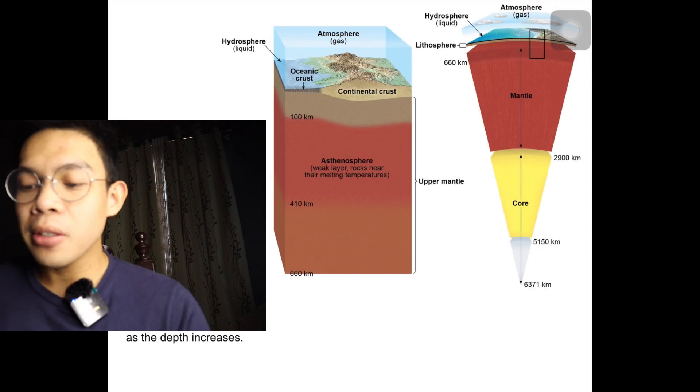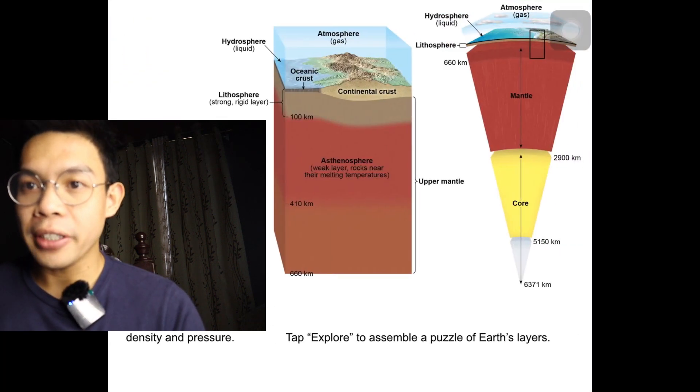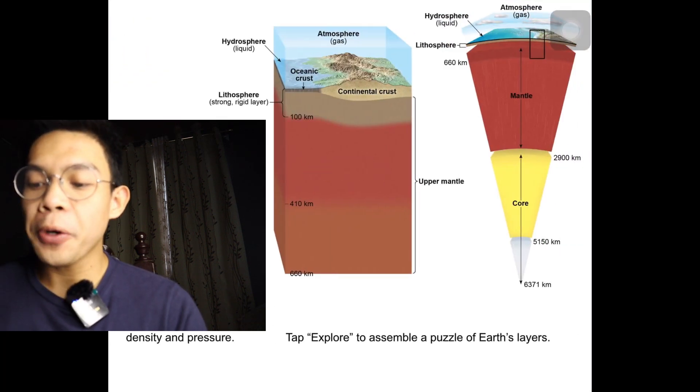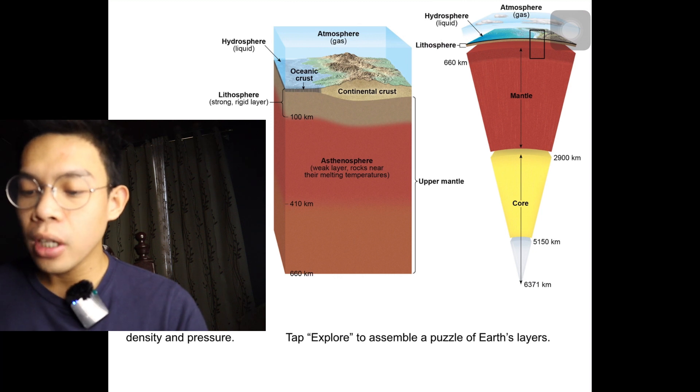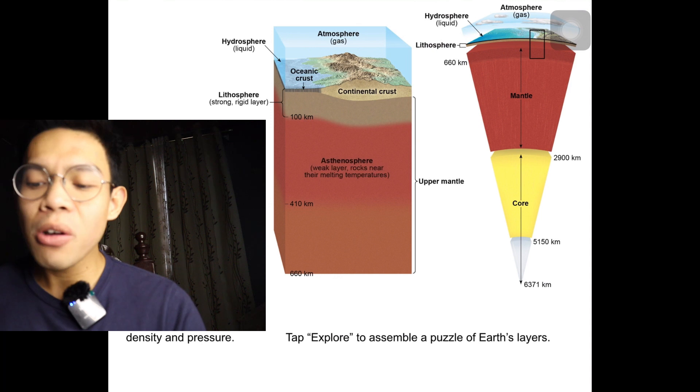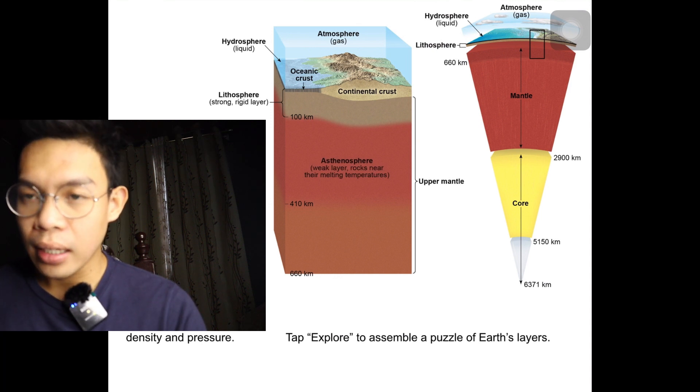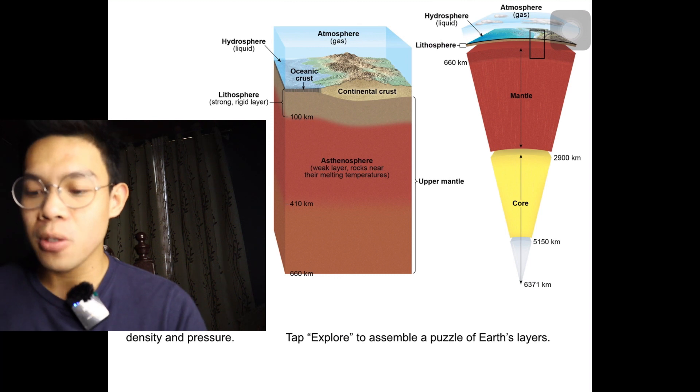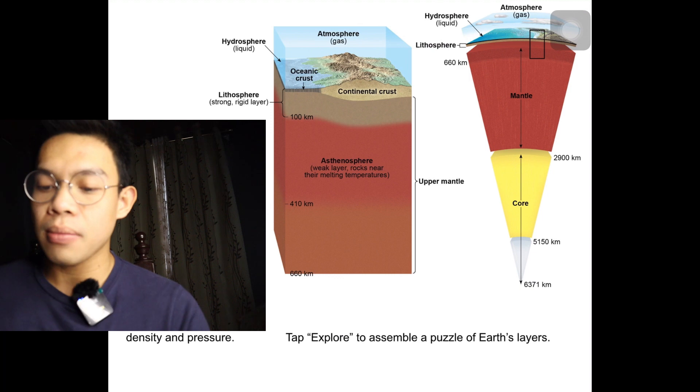Below the lithosphere is the asthenosphere, a weak zone of rock that is capable of gradual flow. Although the rock is solid, its temperature and pressure allow a small amount of melting. The asthenosphere is able to move separately from the lithosphere. It extends down to about 660 kilometers (410 miles), where the rocks at that depth have higher density and pressure.